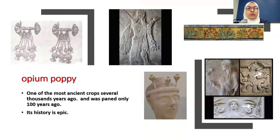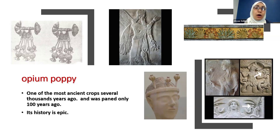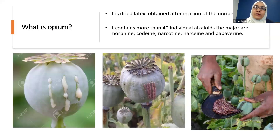Opium can be considered one of the most ancient crops present on earth. It was found in fossils predating written history, and it was associated with different civilizations, temples, and art artifacts throughout history. If you follow the history of opium you'll find it connected to several epic wars around the world — it's a really interesting topic.